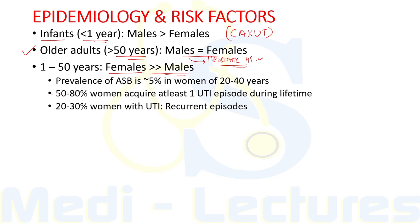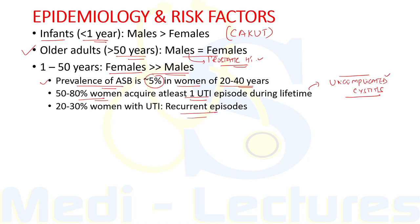In young females, UTI is a very common problem. The prevalence of asymptomatic bacteriuria is about 5% in the general population in women aged 20–40 years. About 50–80% of women in the general population acquire at least one episode of UTI during their lifetime, and the most common is uncomplicated cystitis with only local symptoms and no systemic features. About 20–30% of women with UTI have recurrent episodes. Recurrence occurring less than two weeks is usually a relapse; after two weeks it is usually a reinfection.